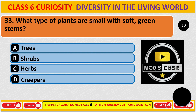What type of plants are small with soft green stems? The correct answer is C: herbs.